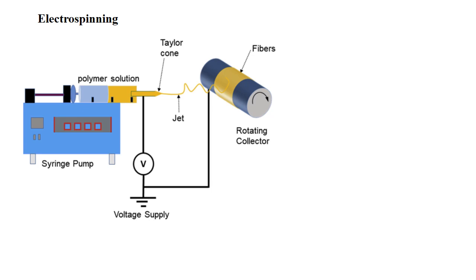So during the migration from needle tip to collector, the solvent which is present in the solution is get evaporated and the fibers which are deposited over the ground collector. So this is the basic working of the electrospinning.